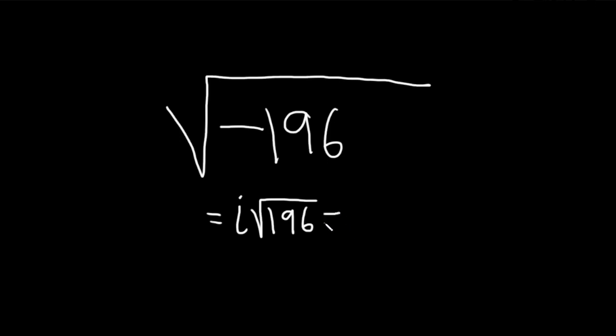Now, this is equal to i, and the square root of 196 is 14, so times 14. But nobody leaves the i in the front like this, so we want to write this as 14i. And so that would be the answer to this problem.